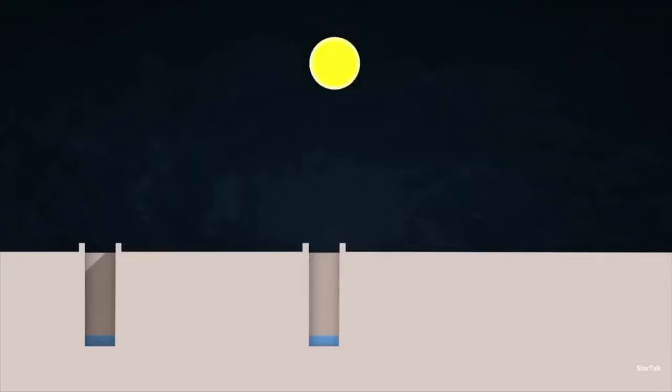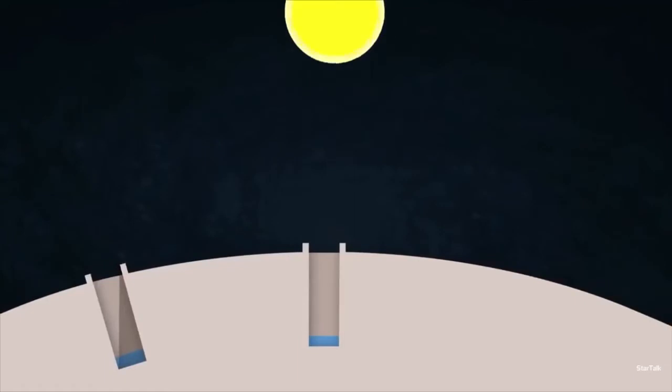First, we could have a flat earth with the Sun that's small and close by, so that the light hits the second well at an angle. Or second, we could have a curved earth with a Sun that's big and far away so that all the light comes in parallel.